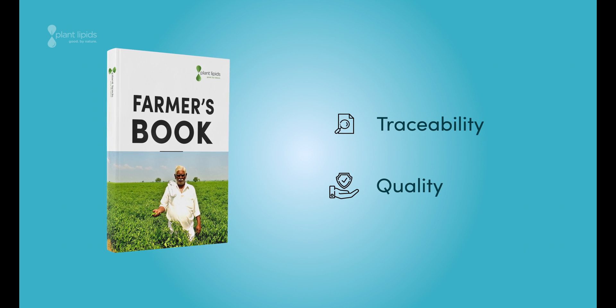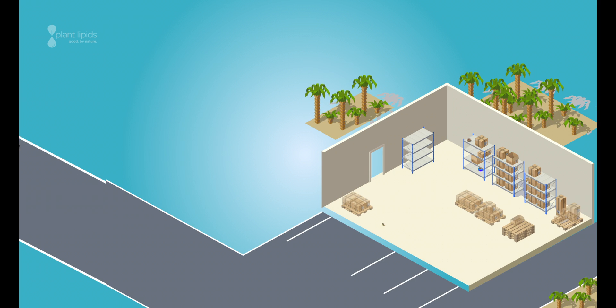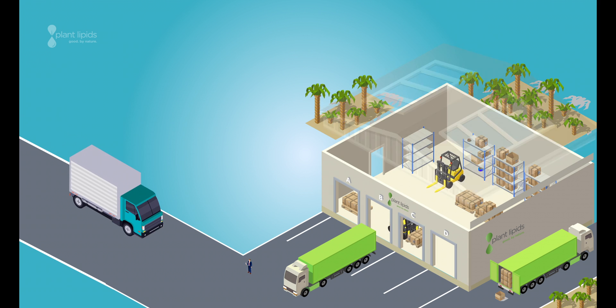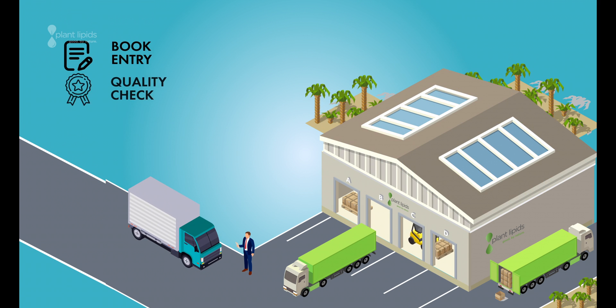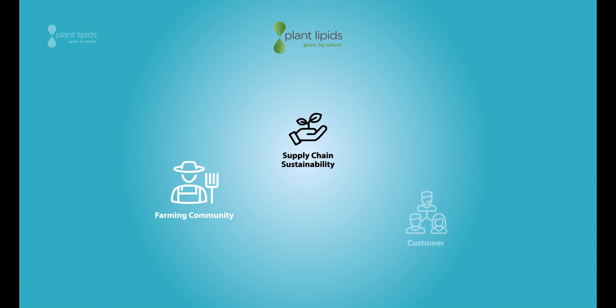These crops are then transported to the cold storage facilities and then to the factory after completing quality checks. Plant Lipids ensures supply chain sustainability practices that benefit both the farming community and our customers.